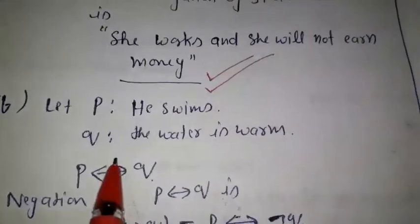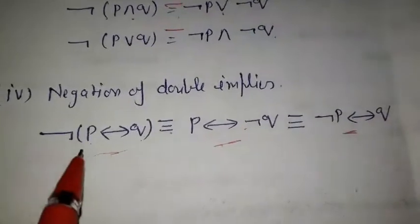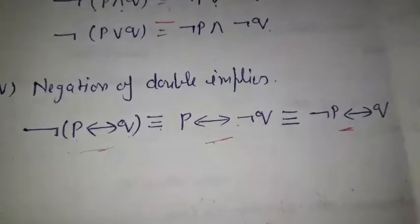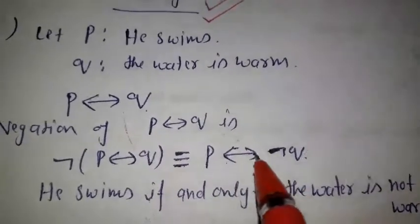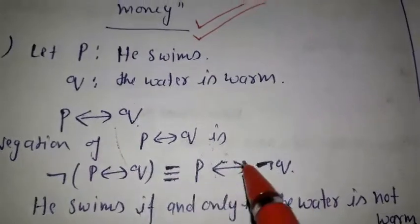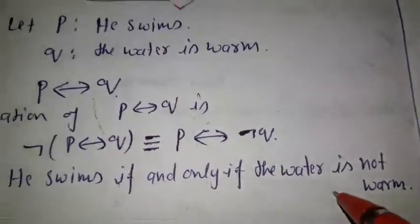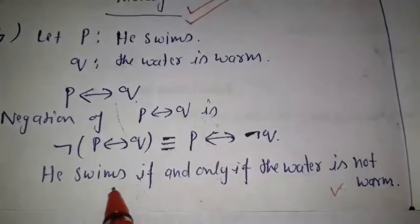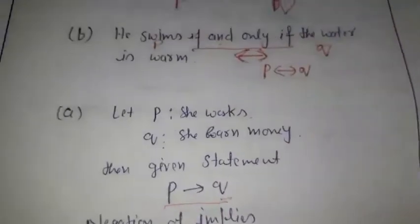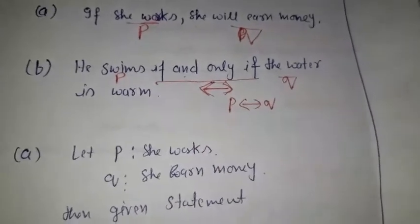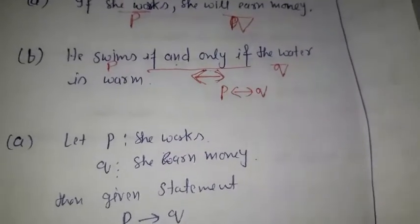We need to find the negation. The negation of the double implication P double implies Q is equivalent to P double implies not Q. So replacing Q with not Q: P means 'he swims', not Q means 'the water is not warm'. Therefore the negation is: 'He swims if and only if the water is not warm.' In this way we can make the negation of different types of statements using the properties we discussed.